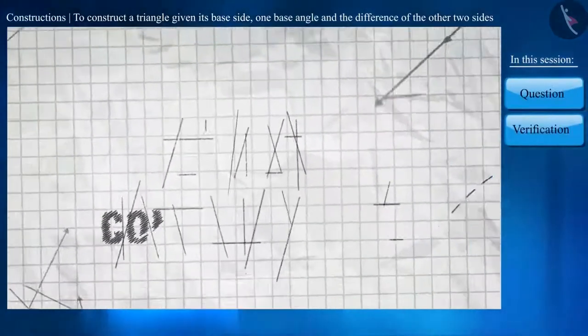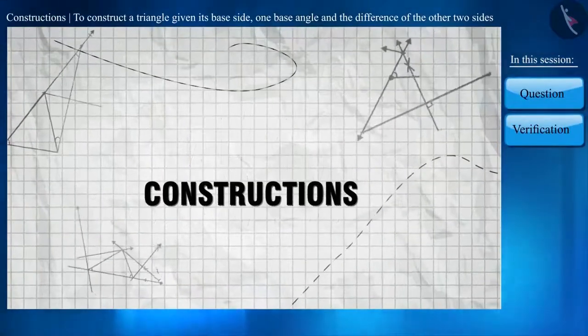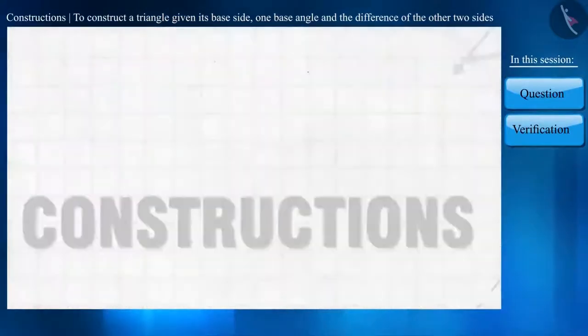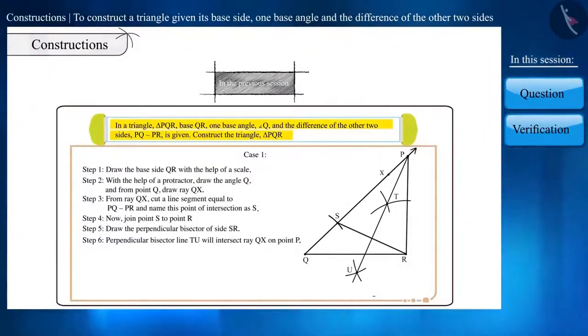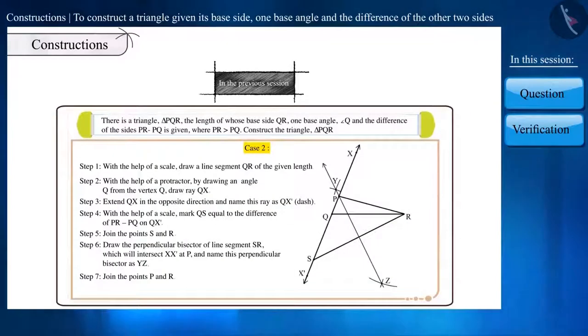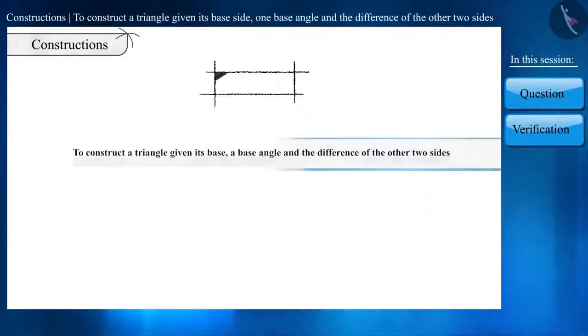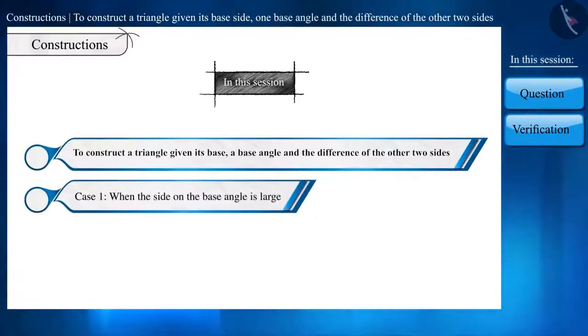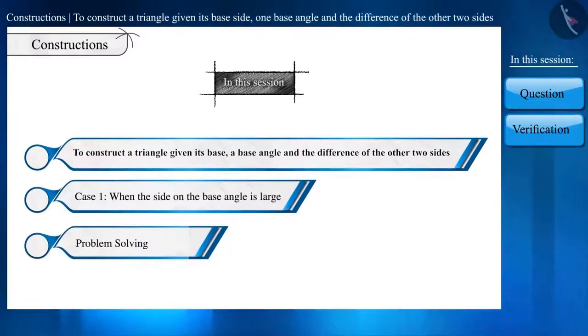Hello friends, welcome to this video on constructions. In the previous video, with the given base side, one base angle, and the difference of the other two sides, we learned the two cases for the construction of a triangle. Case 1, when the side on the base angle is large, and case 2, when the side on the base angle is small. In this video, we will solve some questions based on the first case of these constructions.